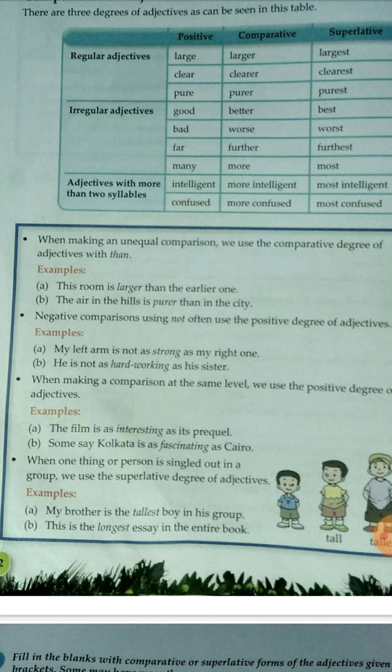For negative comparison, whenever we use a negative sentence, we can use the positive degree of the adjective. For example: 'My left arm is not as strong as my right arm' — there is a negative comparison here. Another example: 'He is not as hardworking as his sister.'